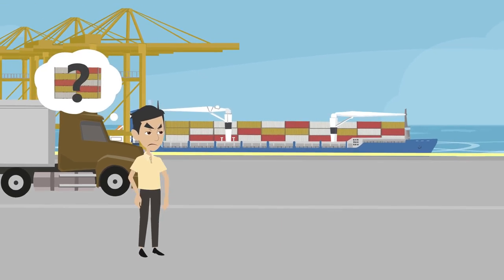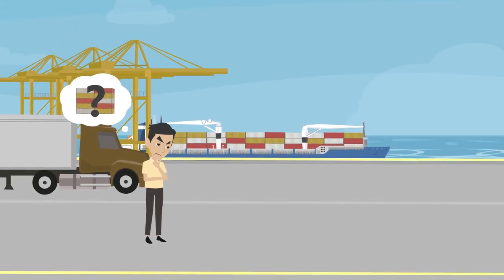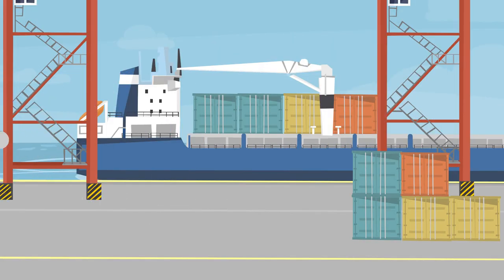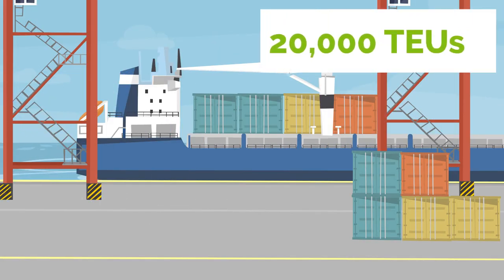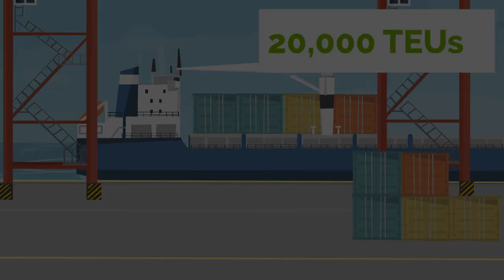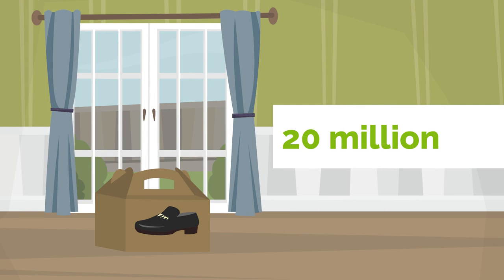And the final question, how much cargo can the largest container ships in the world take? The largest container ship can carry over 20,000 TEUs, 20-foot equivalent units, of cargo. That's the equivalent of over 20 million shoe boxes.